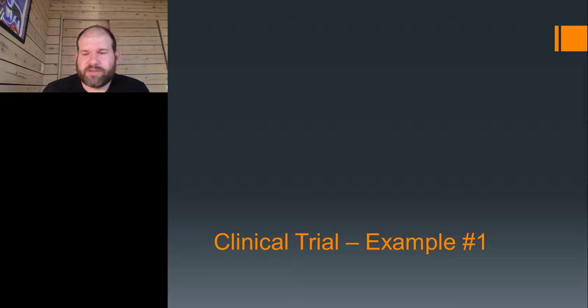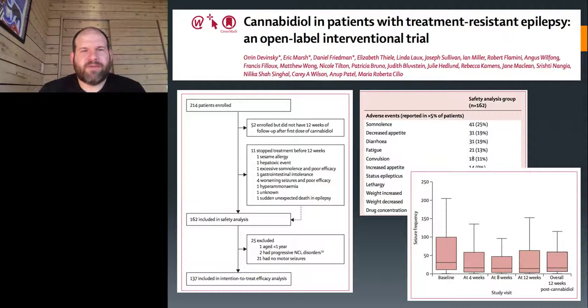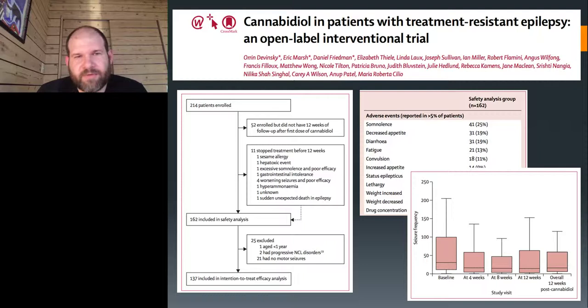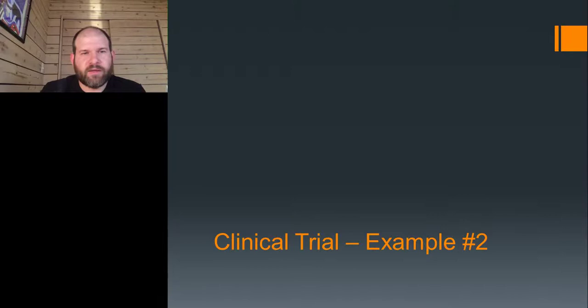Moving to clinical trials — here's a phase two/three Epidiolex study published a few years back. This was an open-label study where all individuals were enrolled and given Epidiolex, looking at the impact on seizures and side effects. Side effects identified included somnolence, decreased appetite, diarrhea, and fatigue. On the bottom right you can see seizure frequency decreasing over 12 weeks. Everybody knew they were getting the drug in this open-label trial, but you look at this change in seizure frequency over 12 weeks as the outcome.